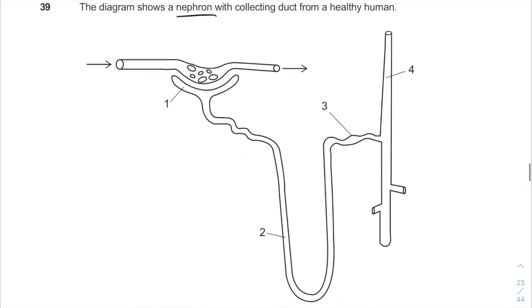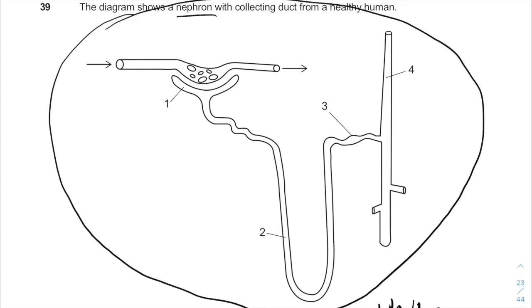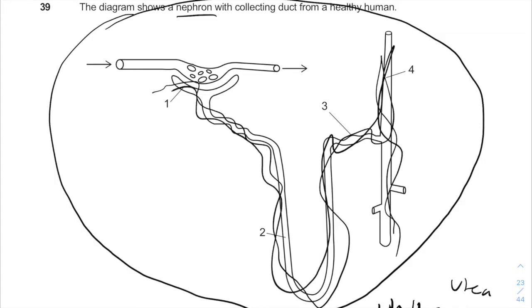Urea can be found in the urine, and the urine is the last product of the system. So basically, it means the entire nephron and all the different parts of the nephron will contain urea, because if it's at the end, it will be contained inside the whole tube of the nephron.